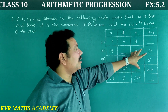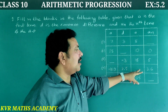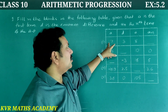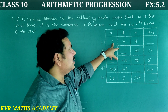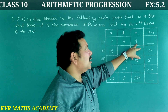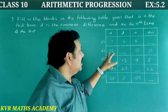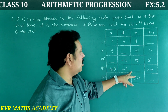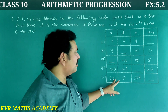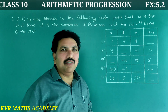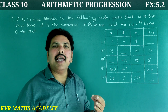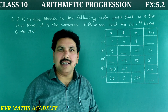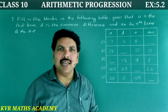In this table, where there are blanks, we need to find the missing values. The sub-parts are: first find A-N; second find D; third find A; fourth find N; and fifth find A-N. The formula we use is: A-N = A + (N − 1) × D.